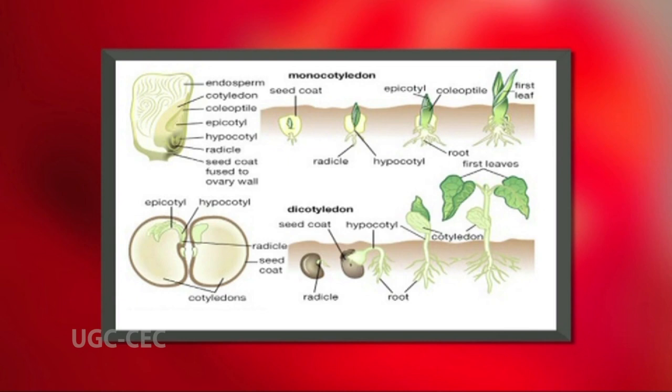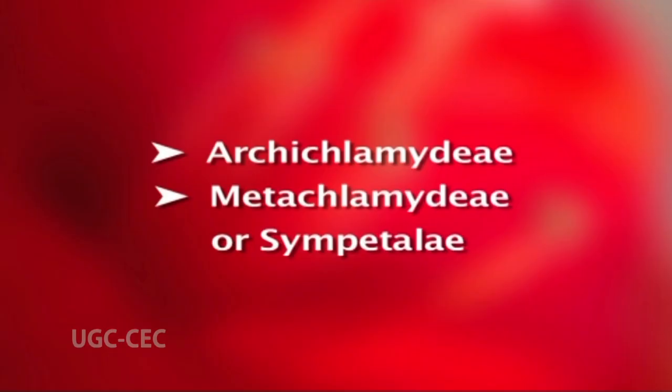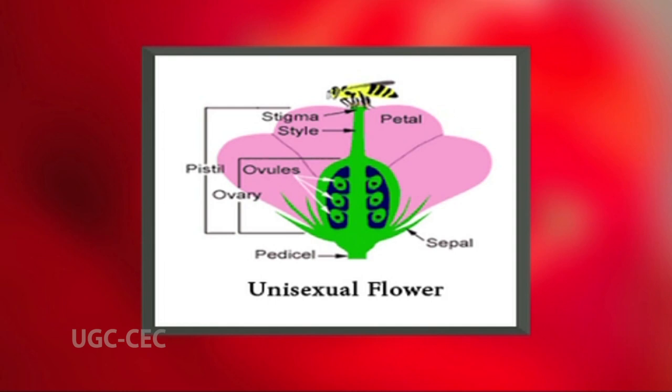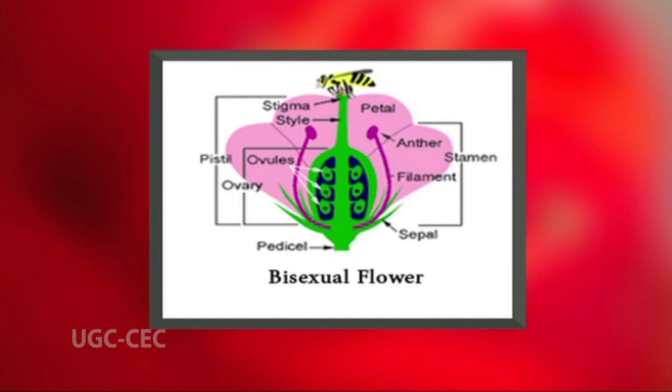The monocotyledons precede the dicotyledons, an idea which gets little support from recent work on fossil data; they never thought the former group is derived from the latter. The class Dicotyledoneae was divided into two subclasses: Archichlamydeae and Metachlamydeae or Sympetalae. Flowers without perianth (achlamydeous) and those with one whorl of perianth (monochlamydeous) were considered primitive, while those with two whorls distinguished into sepals and petals were considered advanced. Unisexual flowers were considered more primitive than bisexual ones.